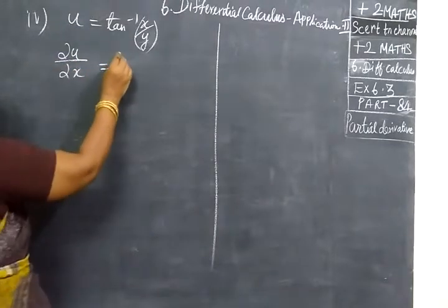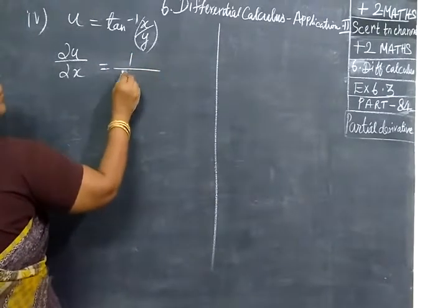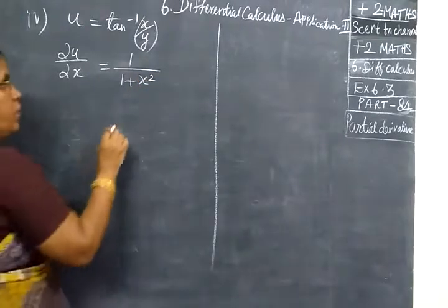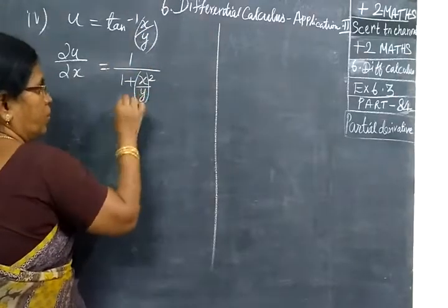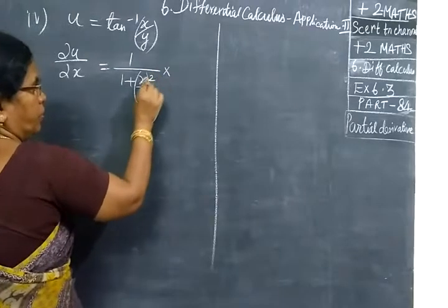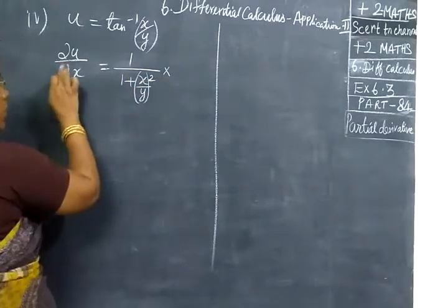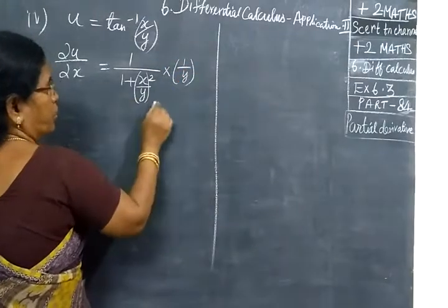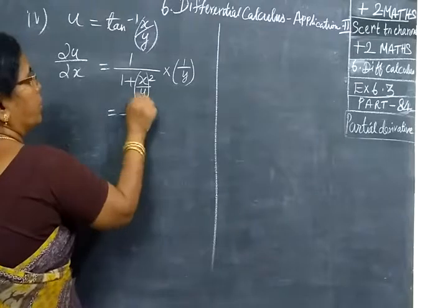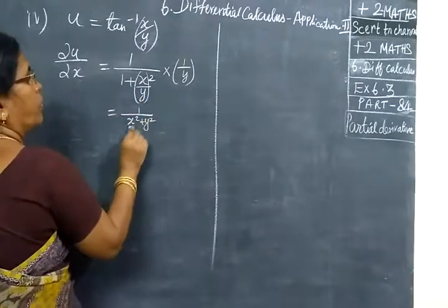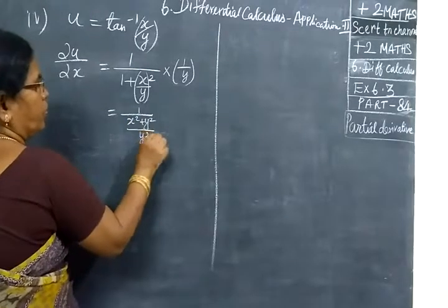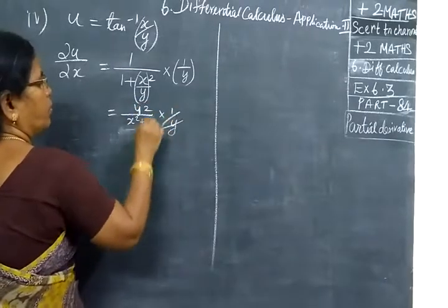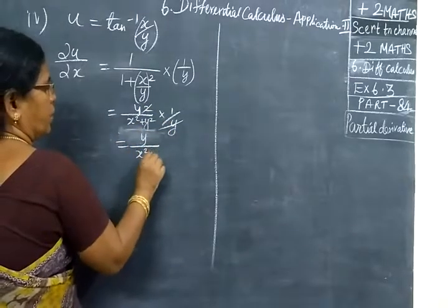The differentiation of tan inverse x/y: the answer will be 1 by 1 plus x-by-y whole square, into the inner function. The inner function is x by y. We are partially differentiating with respect to x alone, so x differentiates to 1 by y. This equals 1 by (x² + y²)/y², which simplifies to y by (x² + y²). So this is ∂u/∂x.